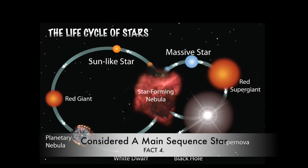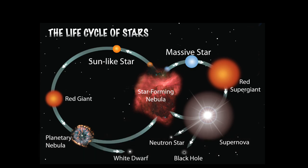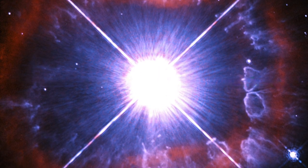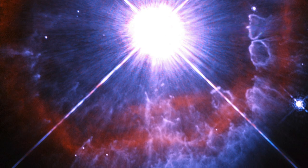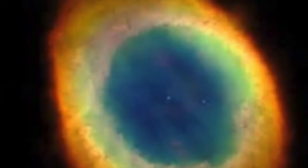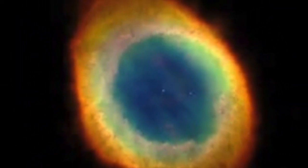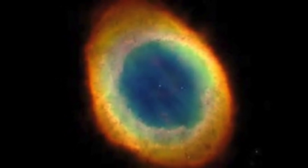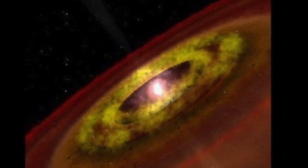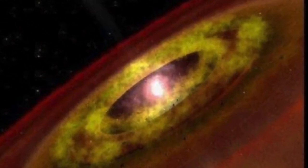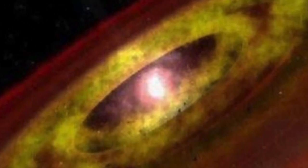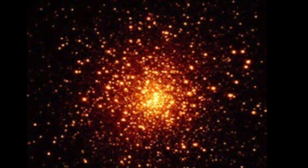Number 4. The sun is known as a main sequence star. In astronomy, the main sequence is a continuous and distinctive band of stars that appears on plots of stellar color versus brightness. Stars on its band are known as main sequence stars or dwarf stars. Main sequence stars fuse hydrogen atoms to form helium atoms in their cores. About 90% of the stars in the universe, including the sun, are main sequence stars.